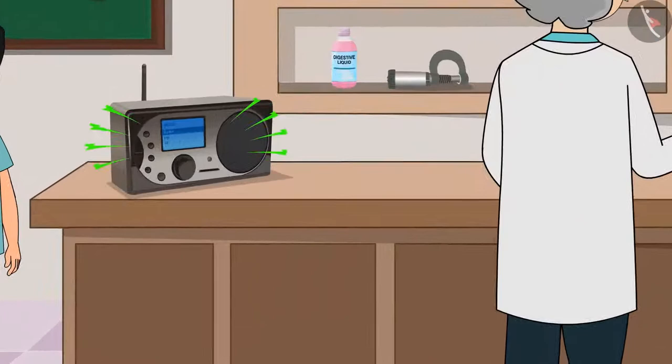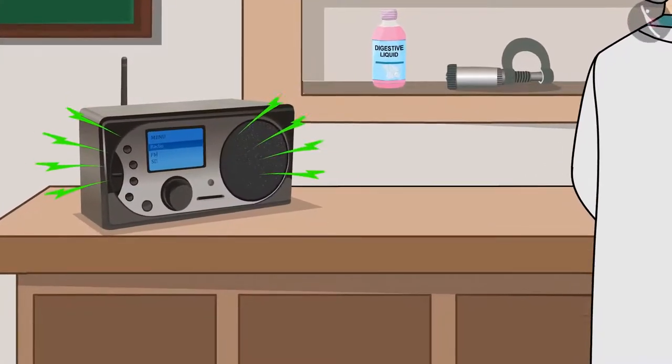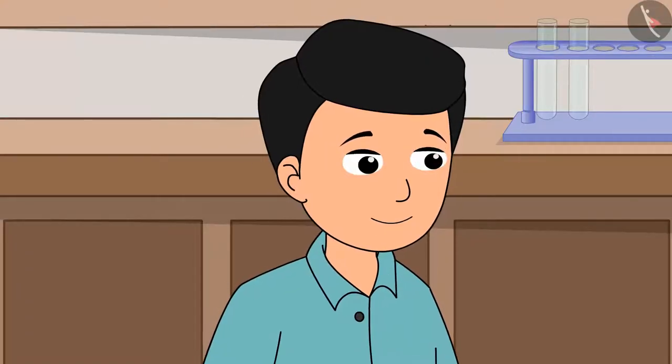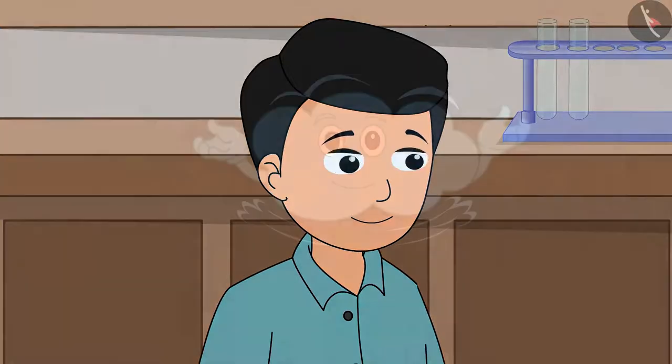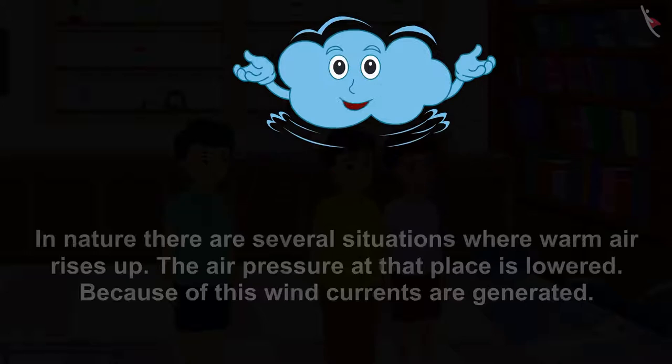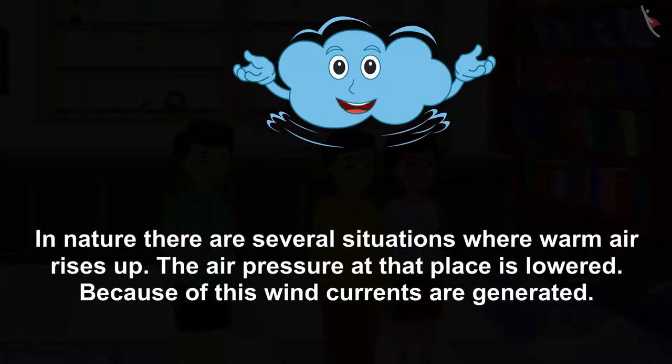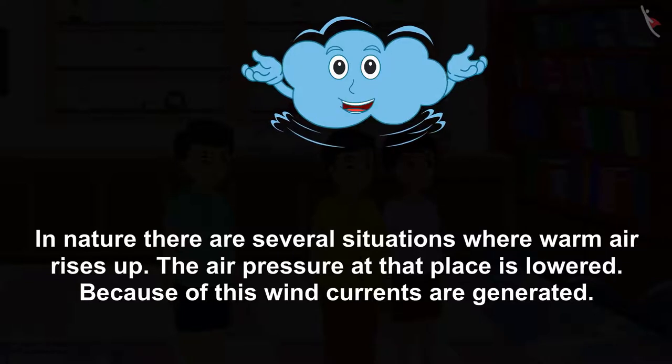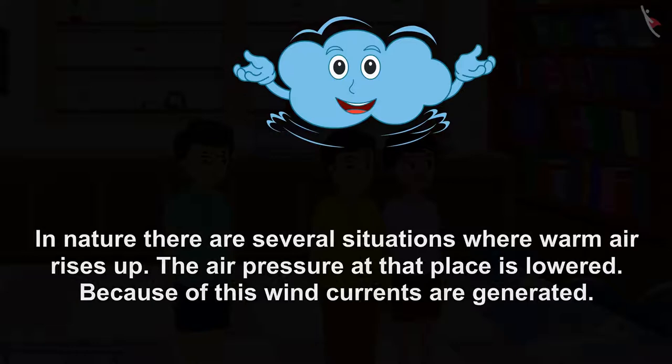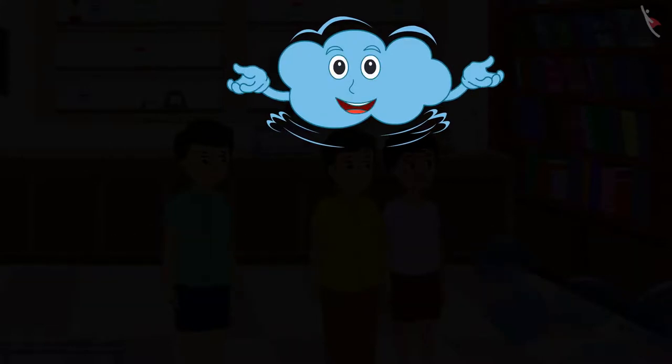Today the wind speed is going to increase. The low pressure built in the coastal regions can lead to stormy weather. Let us go home. I do not want to get stuck in the storm. Yes, friends, today my speed is going to increase. In nature, there are several situations where warm air rises up. The air pressure at that place is lowered. Because of this, wind currents are generated. All of you also peep outside your windows. Look, if you also see a storm coming, I change my flow and speed frequently. We shall learn more about this in the next video. Take care of yourself.